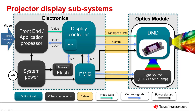This block diagram shows the key components of the entire projector display subsystem, including the DLP components and the interconnections. In general, there are interconnecting cables between the electronics and optics subsystems, as highlighted in yellow. Blocks highlighted in red are components of the DLP chipset, which includes the digital micromirror device (DMD), the display controller, the PMIC, and the firmware.